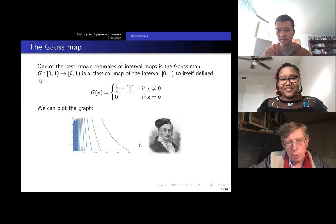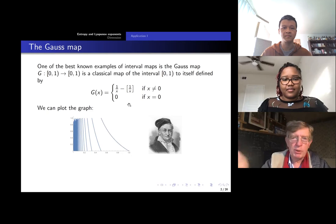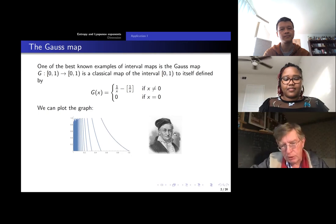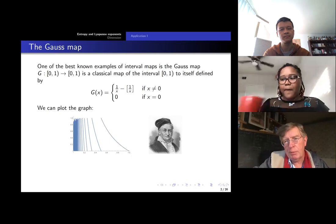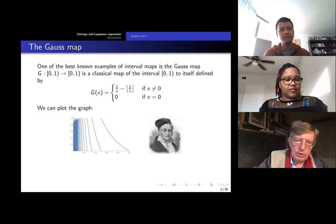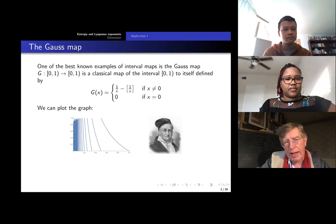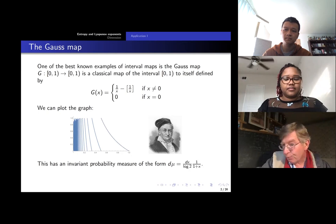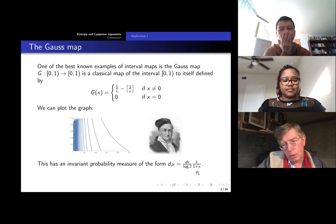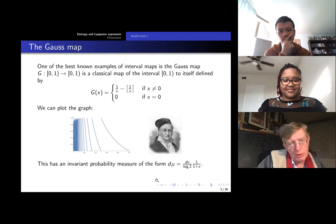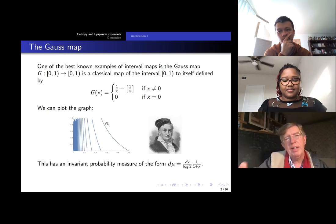It's got infinitely many branches. Between a half and one, it maps by taking the reciprocal and subtracting one, and then similarly for all the other branches. This is a picture of Gauss, of course. It's a very well-known example of a map of the interval to itself, and it also has natural properties. It has a very well-known absolutely continuous invariant measure, which is the Gauss measure — equivalent to the usual Lebesgue measure except it has a density one over one plus x, with a factor of log two to normalize it to a probability measure.